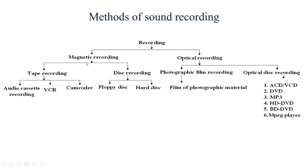Magnetic recording is again of two types. Tape recording — you might have seen audio cassette recordings, VCRs (video cassette recorders), and camcorders. These are the types of tape recording, done on magnetic tapes. Disc recording includes floppy disks and hard disks, which are examples of magnetic disc recording.